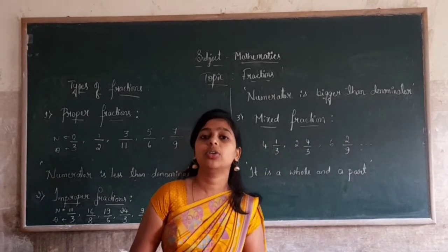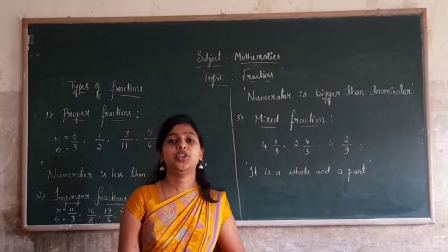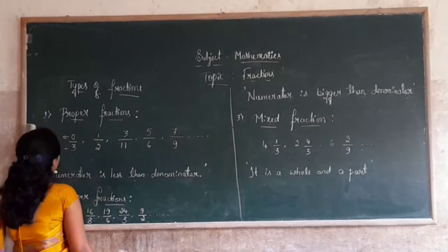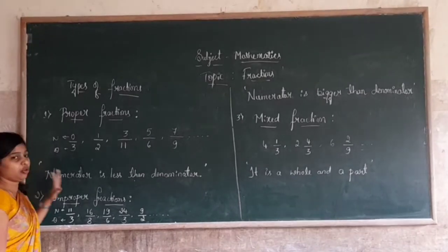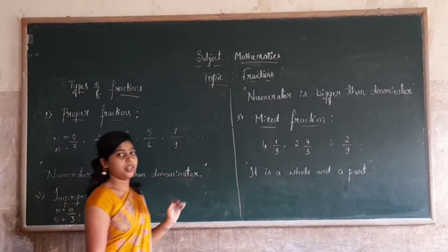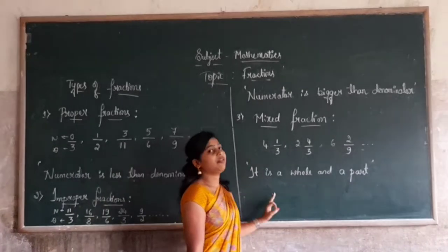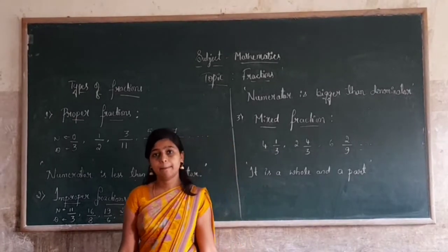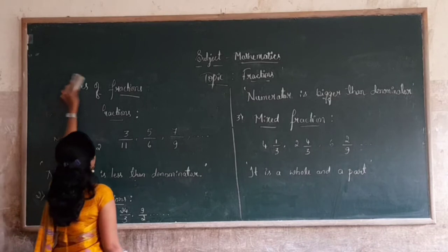Next we move on to converting improper fractions into mixed fractions. To summarize types of fractions: proper fraction means numerator is less than denominator, improper fraction means numerator is bigger than denominator, mixed fraction means it contains a whole and a part.